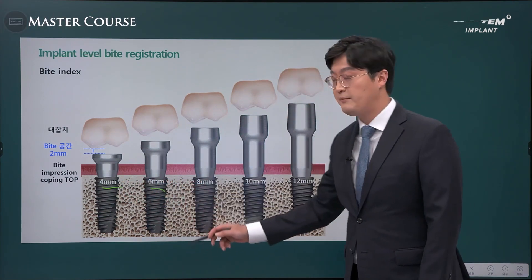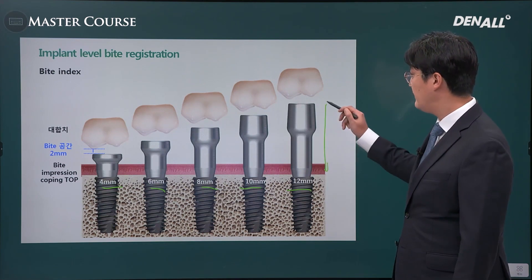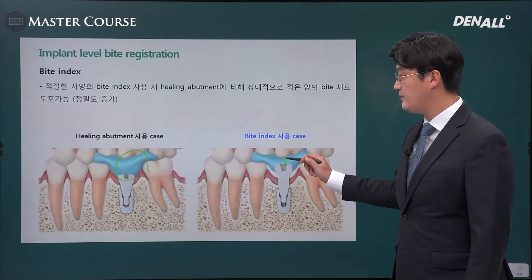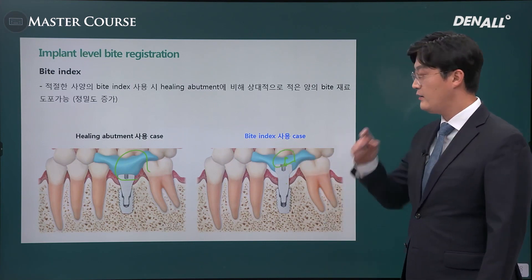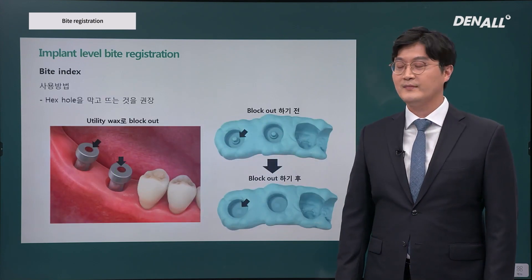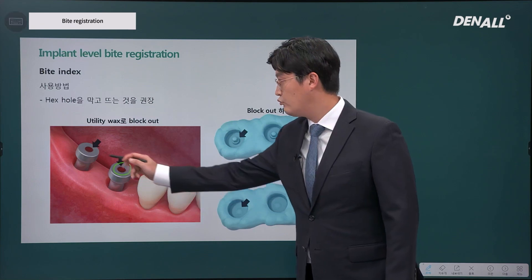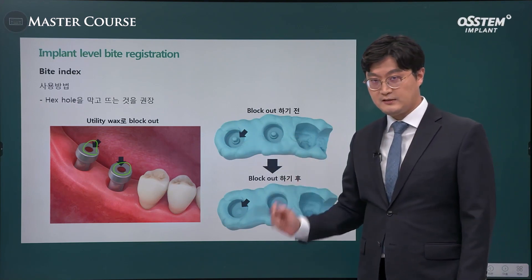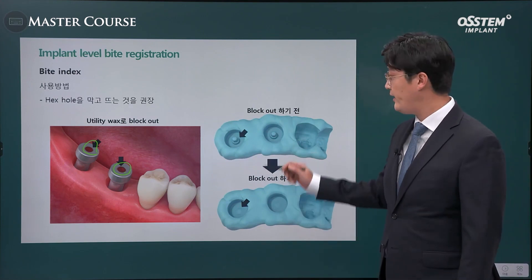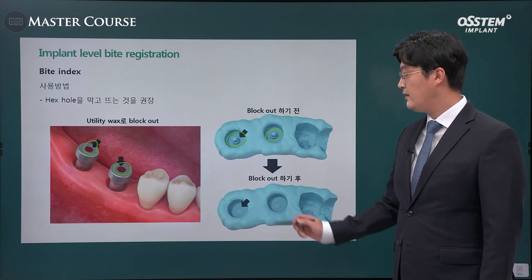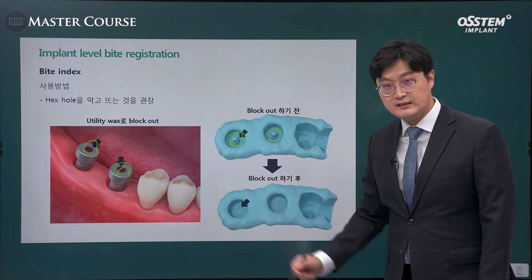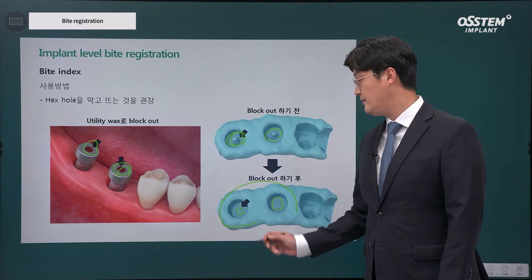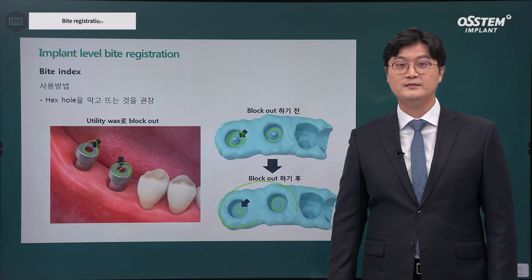Unlike the healing abutment, if you use a bite index, the thickness will be less than two millimeters, resulting in a lower probability of error. In case of a bite index, the holes in it are better blocked out with wax. If you don't block them out, polyvinyl siloxane's high detail reproducibility will reproduce the holes, and when you try to deliver the bite index again, it might not go in. So, block out the holes first, then take the bite registration — the details will not be reproduced and you can seat it in the correct position.